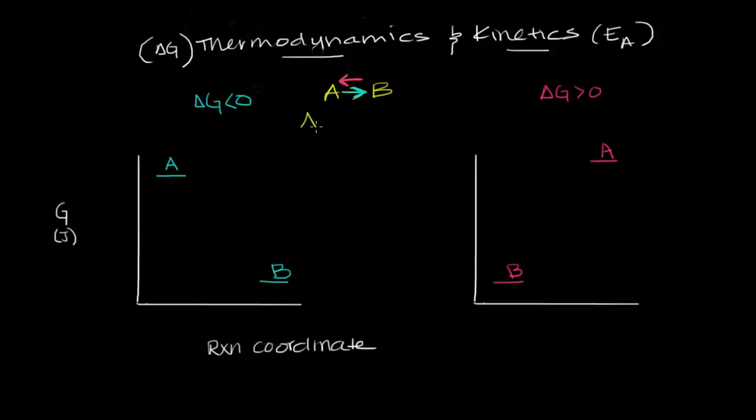In other words, in our hypothetical reaction of A going to B, it proceeds through an intermediate, that is, a high energy chemical product that won't last very long, but is important in the conversion of A to B, or vice versa.